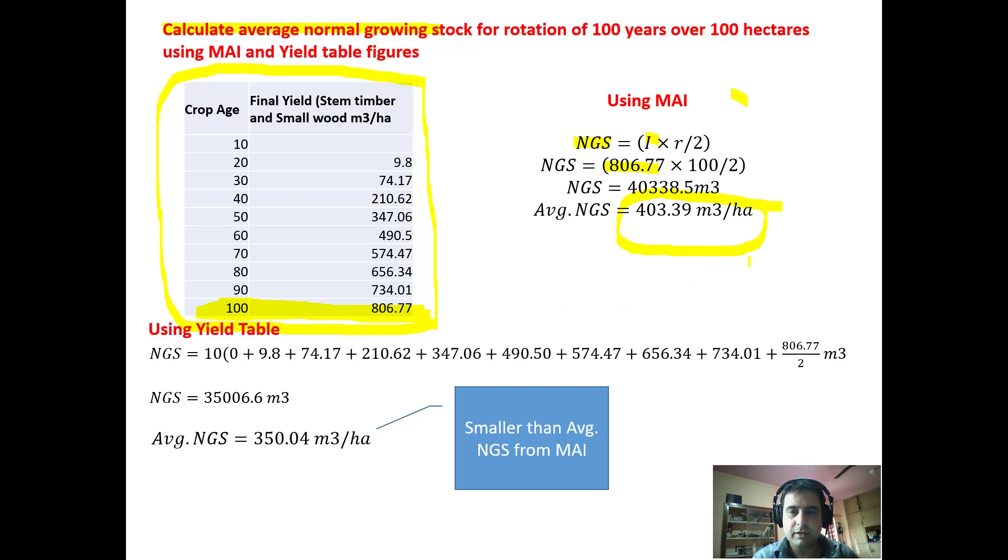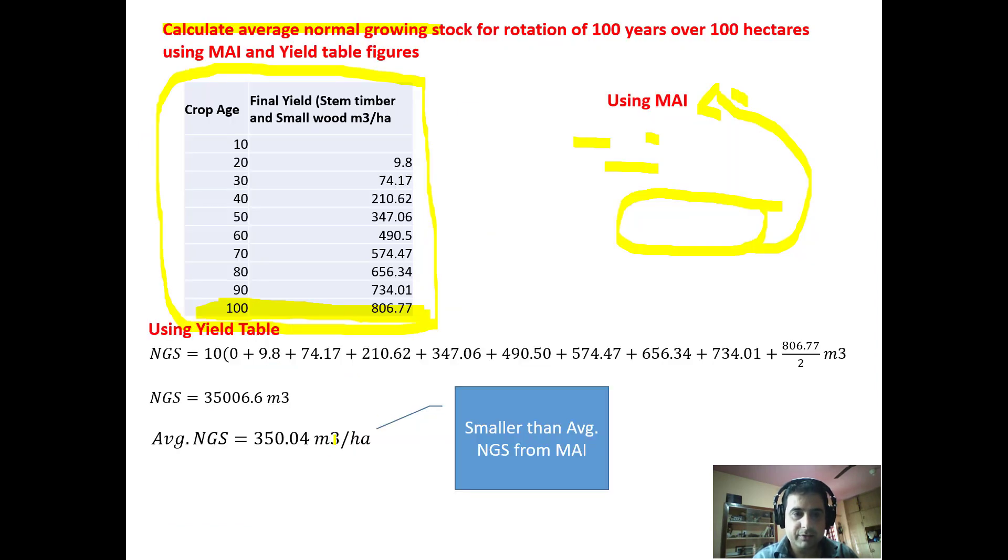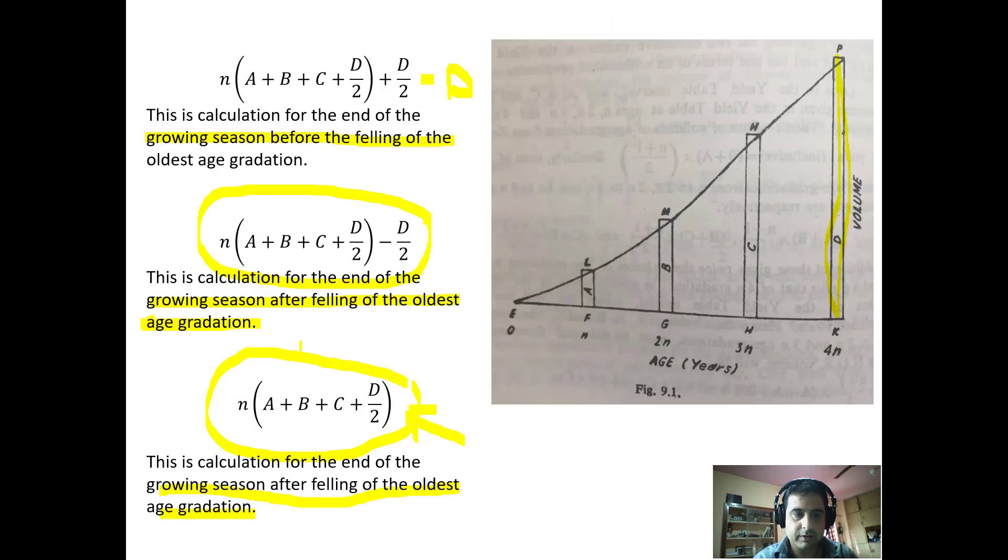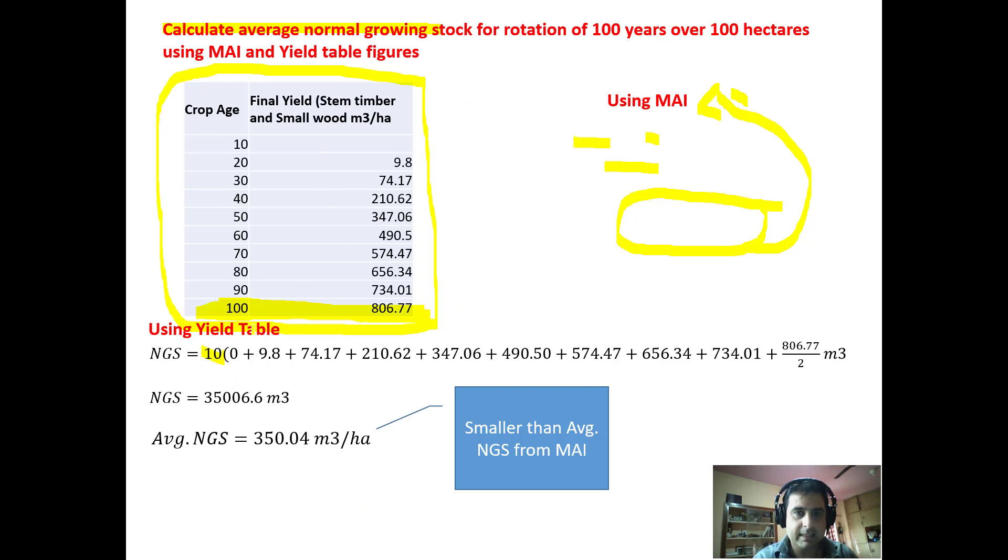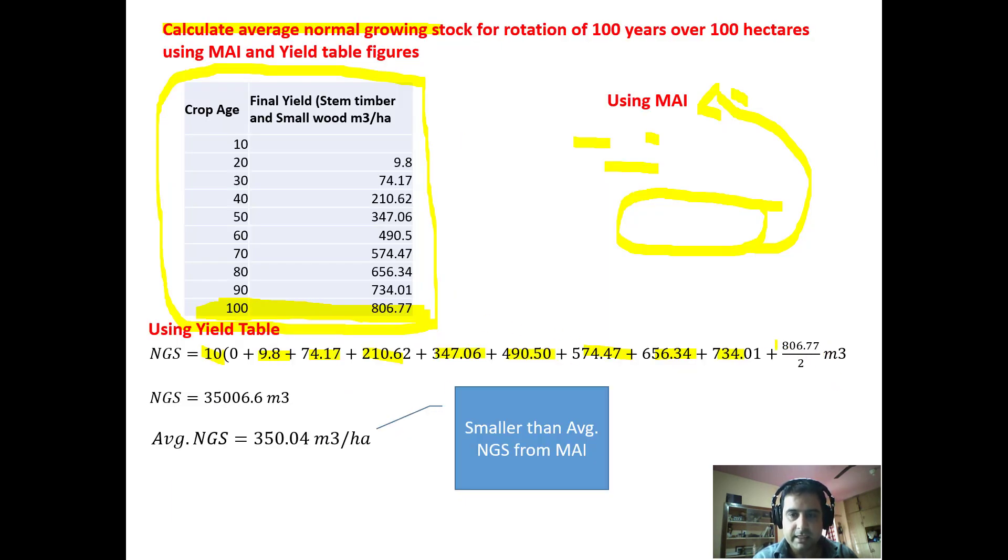This is the growing stock using MAI method. Now if we use the yield table method, we use this formula. N is 10, then the first term is 0, then A + B + C + D + E + F + G + H + I. The last term is to be divided by two. So last term is 806.77 divided by two. This is the normal growing stock using yield table method: 350.04 cubic meters per hectare.